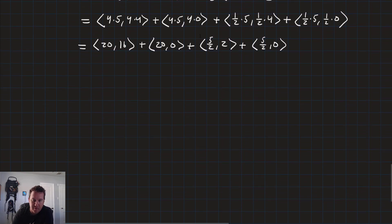Now it's just regular vector addition. So we get one big vector that's got 20 plus 20 plus 5 halves plus 5 halves and 16 plus 0 plus 2 plus 0.